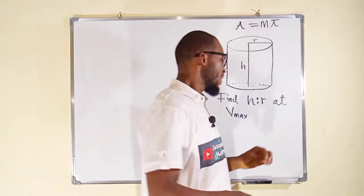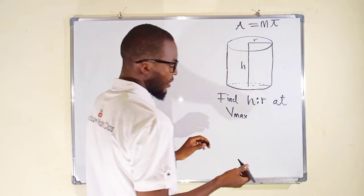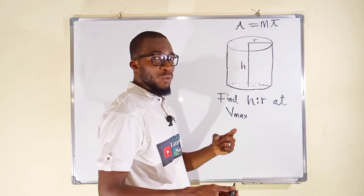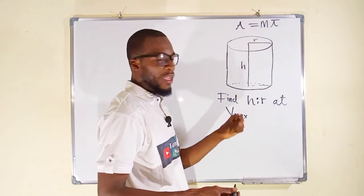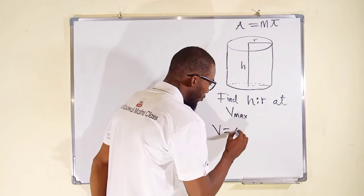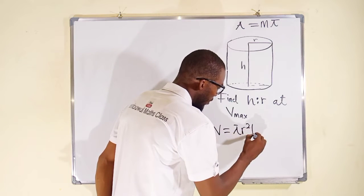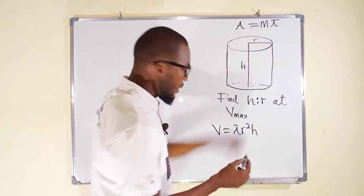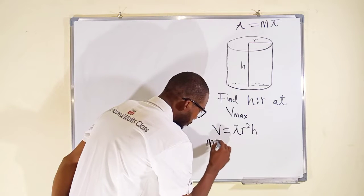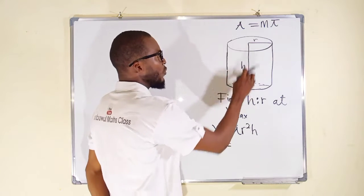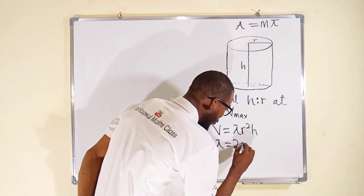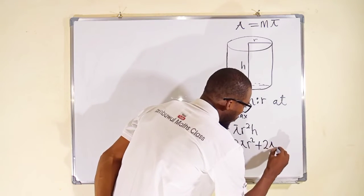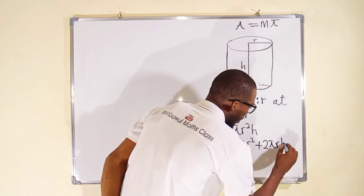For the volume, it is the area of the base multiplied by the height. The base is a circle, and the area of a circle is pi r squared, so V equals pi r squared times h. For the total surface area, which is given as M pi, we have: M pi equals 2 pi r squared (the two circular bases) plus 2 pi r h (the curved surface).